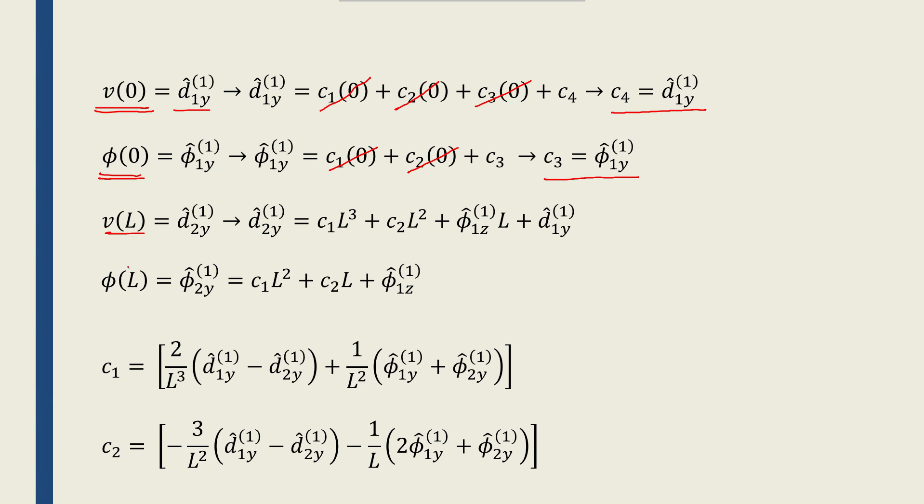Now, if I put L for X, I will end up with these two equations: C1L³ plus C2L² plus phi1Y L plus D1Y, and then phi(L) equals C1L² plus C2L plus phi1Y.